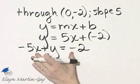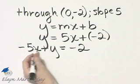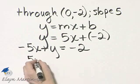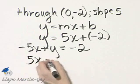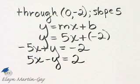You may see it written like this. You may also see it written in another format. Let's multiply through by negative 1. This times negative 1 is 5x, this times negative 1 minus y, and this times negative 1 is equal to 2.